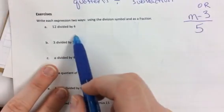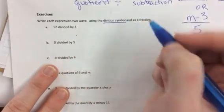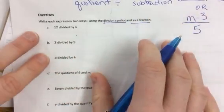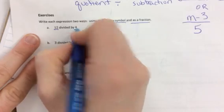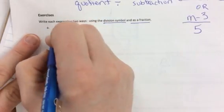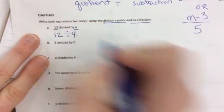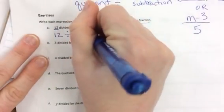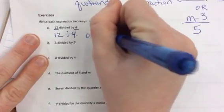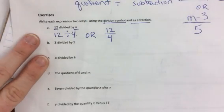For exercises, all you have to do is write each expression in two ways using your division symbol and as a fraction. So the first one is pretty simple. It's using numbers. We're writing expressions. We're not solving them. So we're going to write 12 divided by 4 using the division symbol. Or, as a fraction form is 12 over 4.